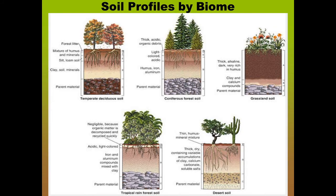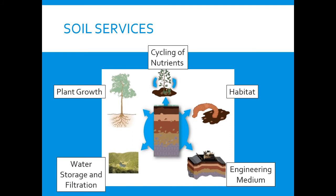Different biomes have different soil profiles. In a temperate deciduous forest you see a very different soil horizon compared to a grassland, where there's a huge A layer and then a small B and C. Desert soil — which is kind of us — has a thick B layer, is dry, and has no E layer. An E layer exists in tropical rainforests and in coniferous forest soils, where it's especially pronounced. Pine trees are acidic themselves, so a lot of that acid contribution comes from them.